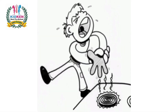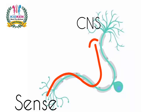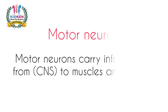For example, when you touch a hot surface with your fingertip, this information travels to our central nervous system — that is, to our brain — and we move our hand away from that hot surface. So this is how sensory neurons carry information from our senses to our central nervous system.